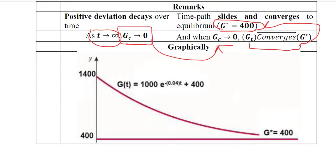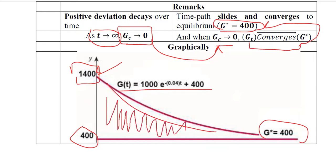It is also visible in this diagram where you can see 400 is the equilibrium of this gold mine value and 1400 is the initial value, the initial condition. And as time passes, the time path is now declining as the deviation, that is the complementary function, is declining.